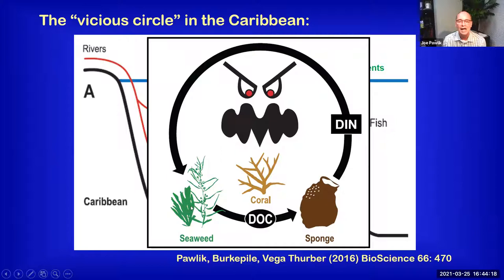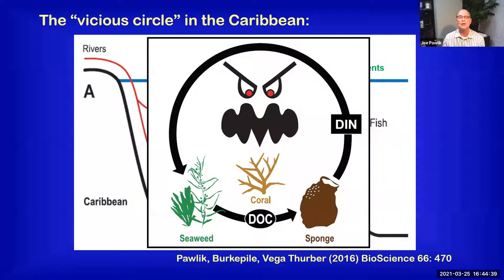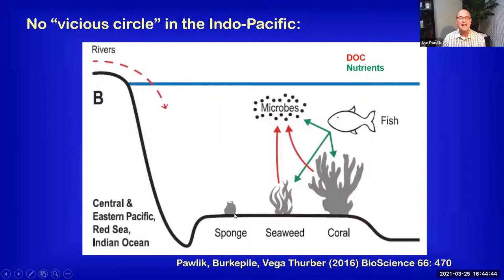Both sponges and seaweed out-compete and make life miserable for reef-building corals. There are other aspects to this vicious circle hypothesis I don't have time to go into, but this is the most important component. In the Indo-Pacific, you basically have so little sponge cover and seaweed cover that you really are not able to generate the vicious circle. This is why there are big differences between Caribbean reefs and oligotrophic Indo-Pacific reefs.